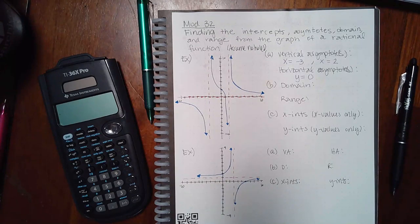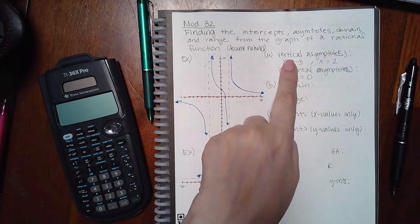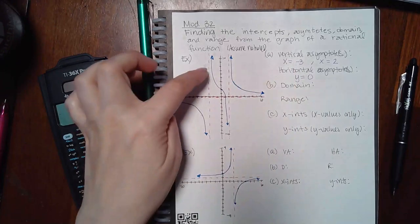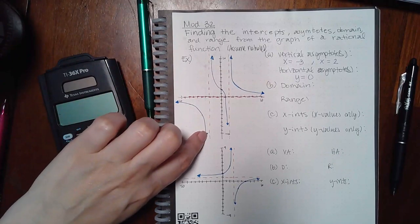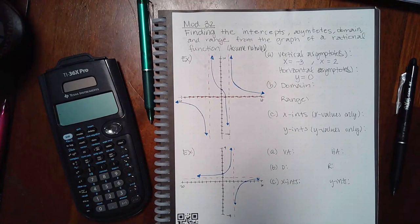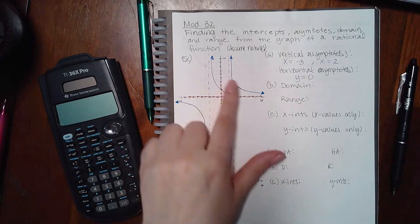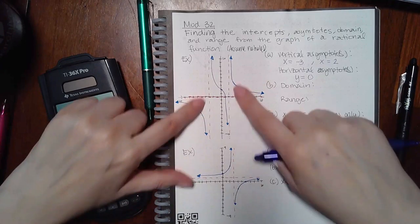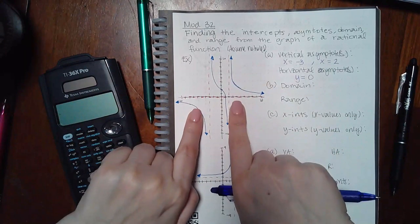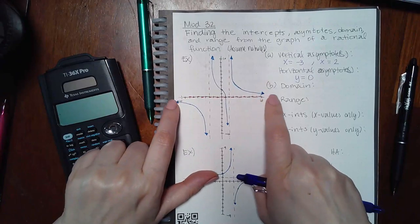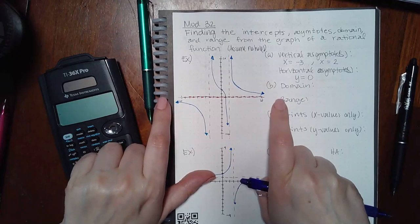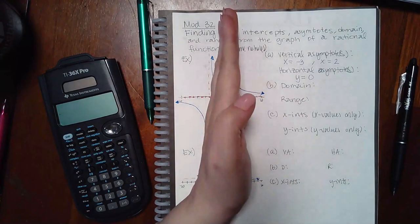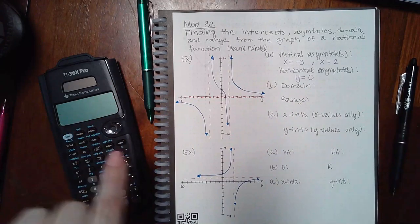Now, important information: you can never, ever cross a vertical asymptote. Never. You will never have a point or a graph cross a vertical asymptote. However, the horizontal asymptote you can cross in the middle, even right next to the vertical asymptotes. But eventually the graphs will trail off toward that invisible line and not cross. So it could cross in the middle, just not all the way out toward infinity and negative infinity.